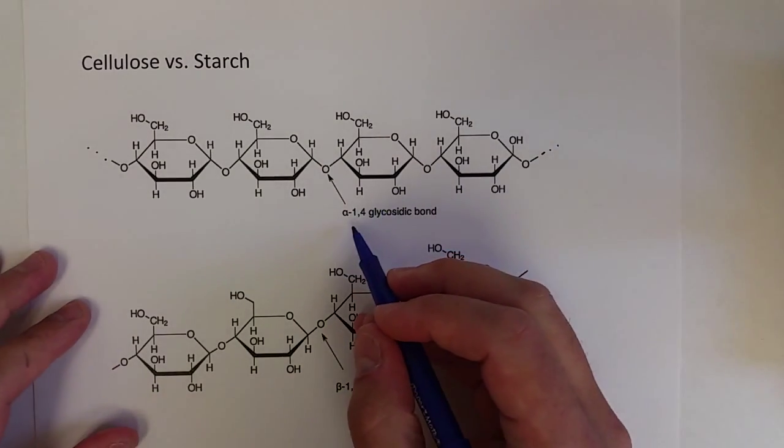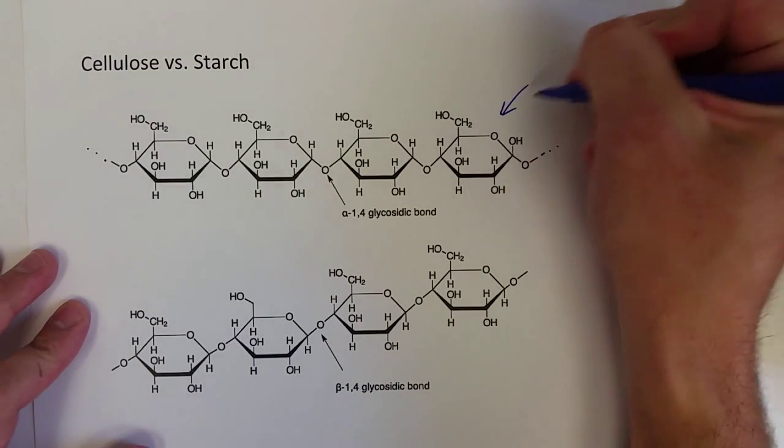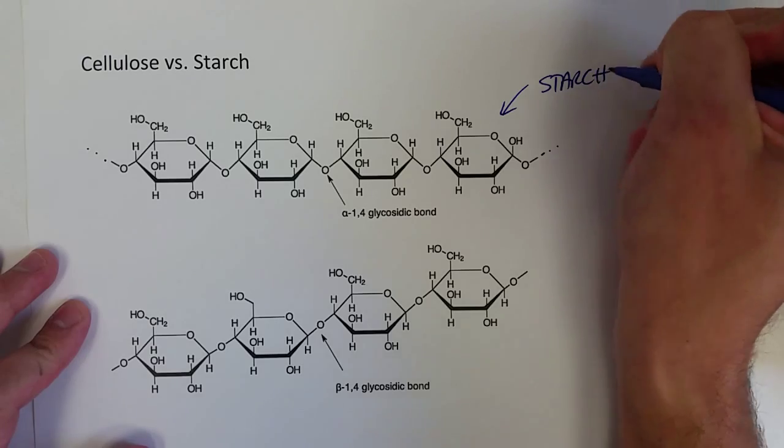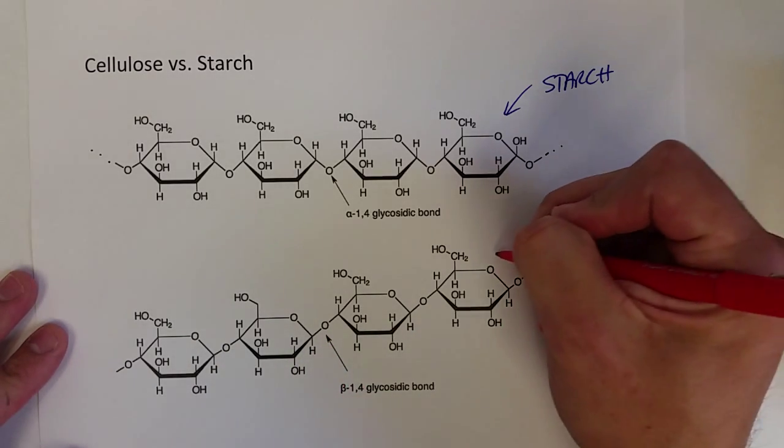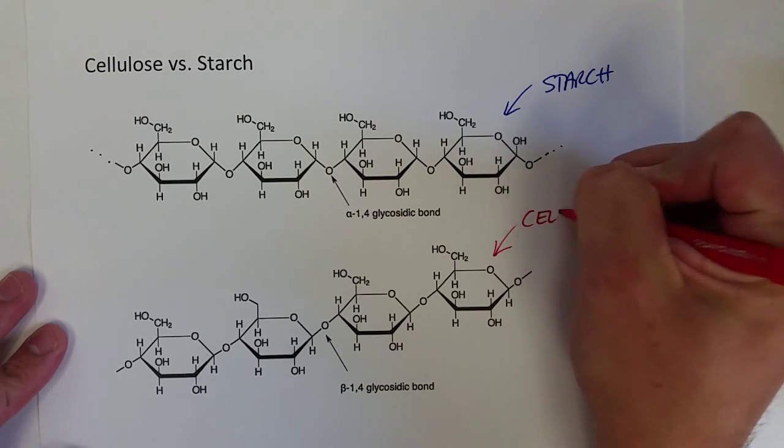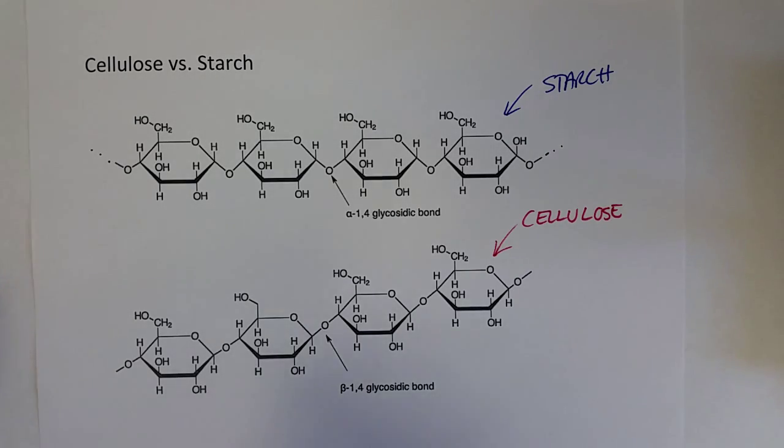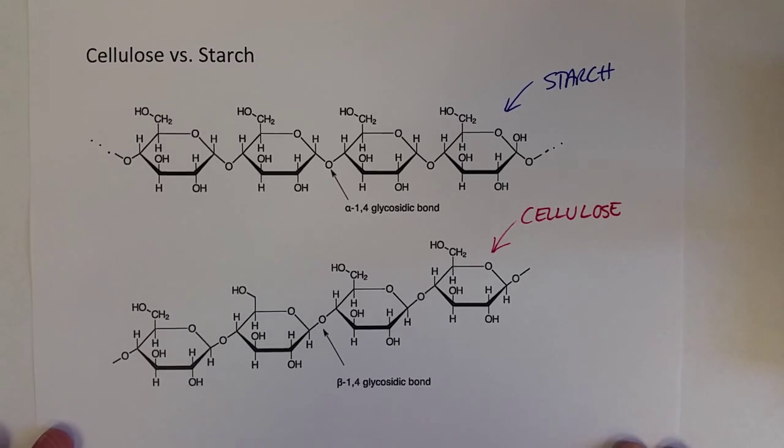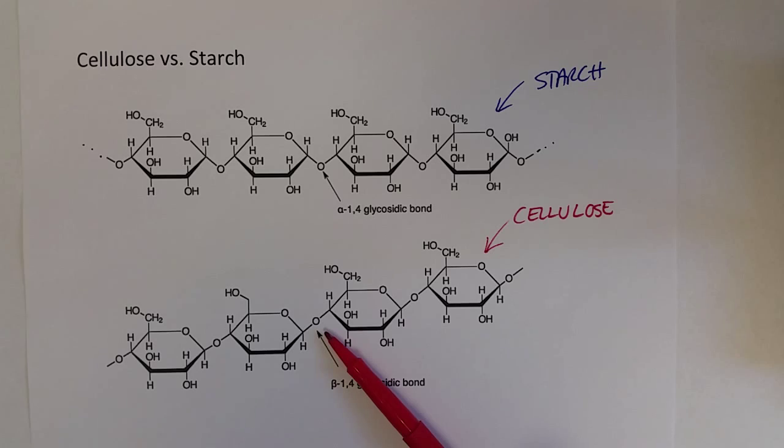The alpha-1,4 glycosidic bond occurs in starch. This is a short sequence of a starch polysaccharide. When the glucose molecules are linked with a beta-1,4 glycosidic bond, that forms cellulose. That very small but very important difference between these two polysaccharides is what enables us to metabolize starch, whereas we can't metabolize cellulose.